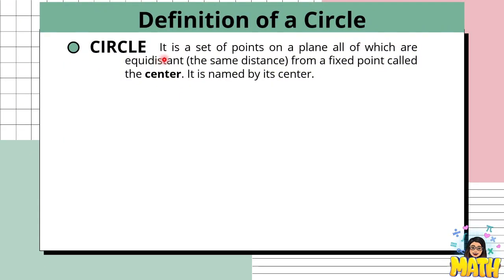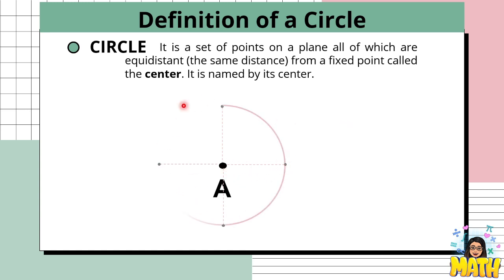So what is a circle? A circle is a set of points on a plane, all of which are equidistant — that means the same distance — from a fixed point called the center. So we need to have a point, and from this point we can draw many points around it which are equidistant from that certain point. If we connect the points that are equidistant from point A, we can form a circle. This certain point in the middle is what we call the center.